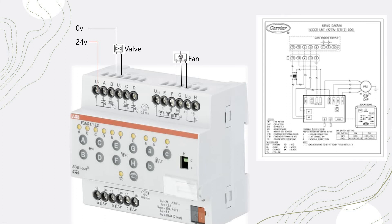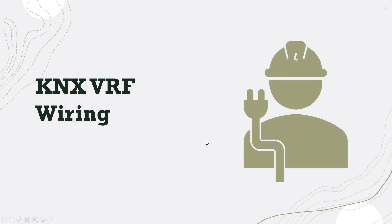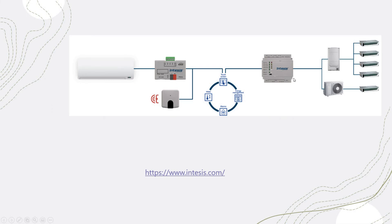For VRF wiring it's quite simple. If you have a VRF system, just connect the Intesis gateway to the VRF network using their own communication ports. The other port connects to your KNX system for control. For example, with a small gateway you can connect to individual units for one-to-one control. If you have a VRF system, I always advise visiting the Intesis website.